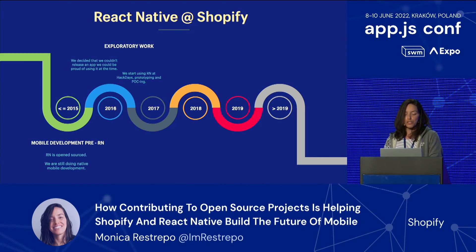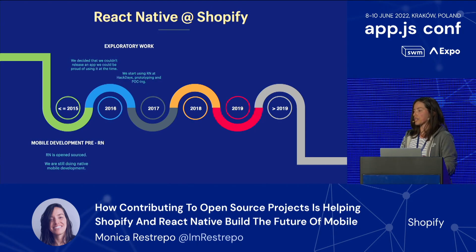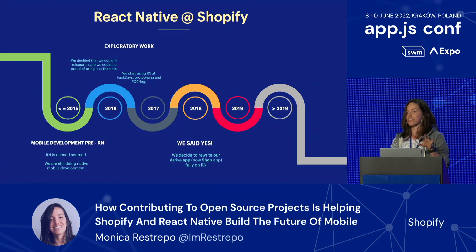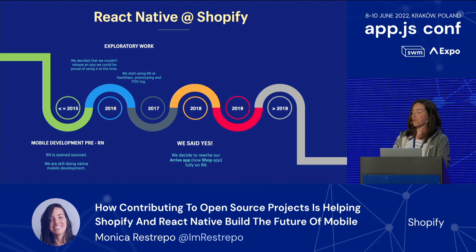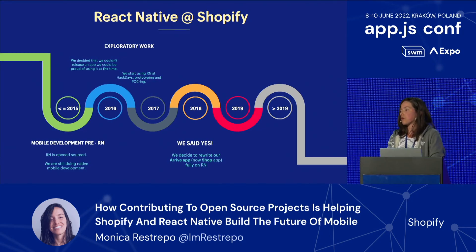We continued exploring React Native, using it in some of our demos, and seeing how viable it was to rewrite some of our existing applications. It was back in 2018 when we decided to say yes to the framework and take on the challenge of rewriting one of our most popular applications at the time, the Arrive app, which is now known as the Shop app. This was a great candidate because we didn't have Android support for it. We had also learned from the experience of a company that Shopify acquired, who had been implementing React Native 100% for their applications, and we realized that having already been using React Web would lower the learning curve for onboarding developers into mobile.